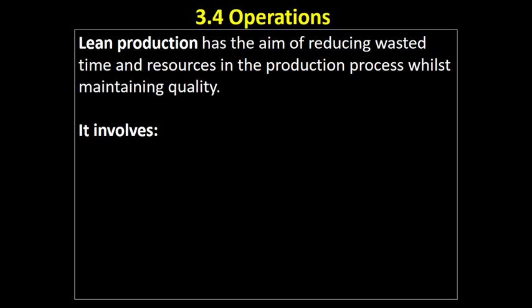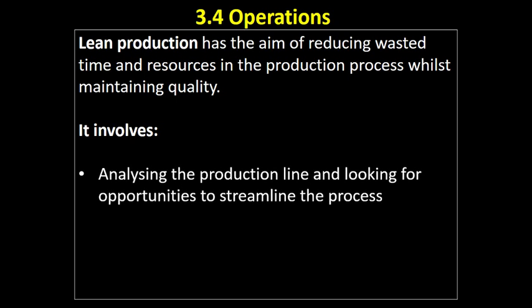Japanese manufacturing was very successful in the 1980s and 90s, and Western businesses tried to learn a lot from them. This method of manufacture was given the term lean production — lean, like a lean piece of meat that's had all the fat removed — that kind of idea of eliminating waste.